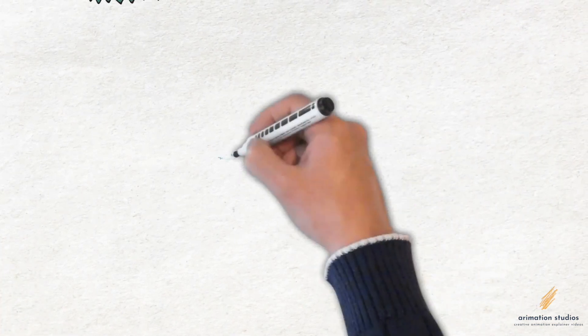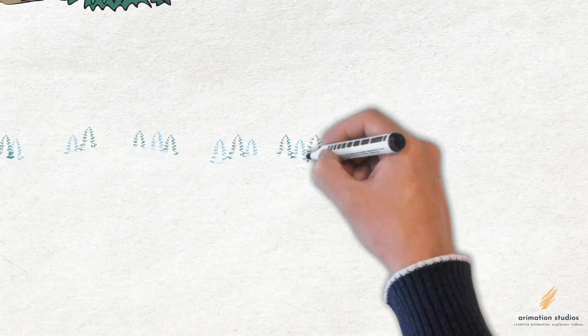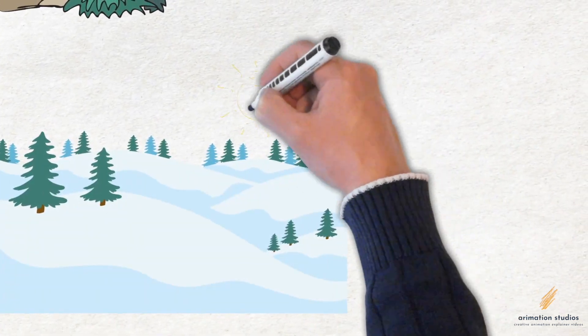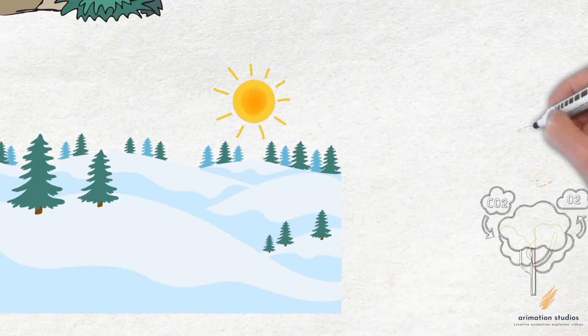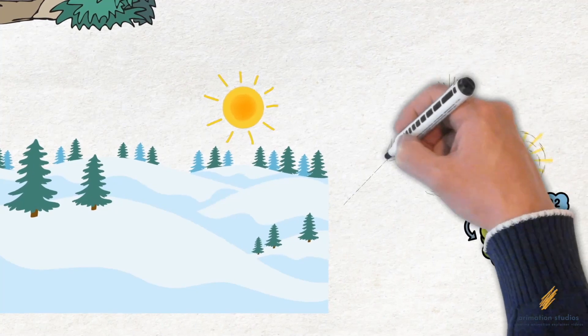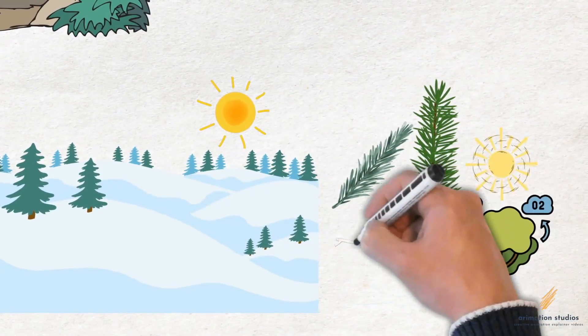Evergreen trees, such as pine, fir, and spruce, remain green throughout the year because they have leaves that are adapted for year-round photosynthesis. These types of trees are able to retain their leaves, or needles, for several years, which allows them to continue to produce food and oxygen even during the cold winter months.